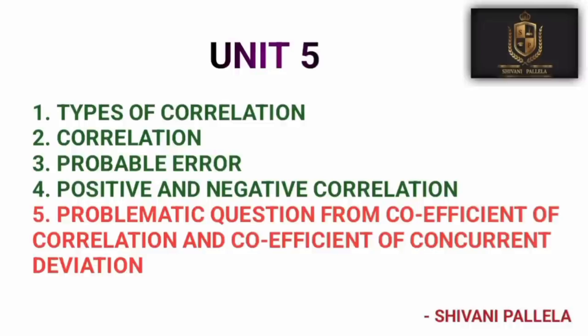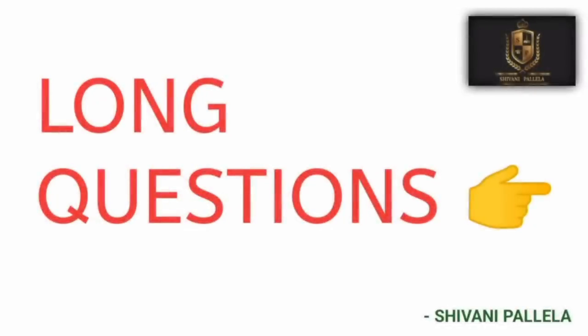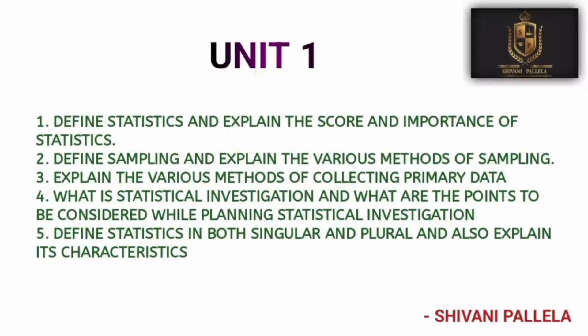Don't spend too much time in Part A — just concentrate on Part B, because Part B carries 60 marks and Part A carries only 20 marks. Your preference should be given to Part B first. In the three-hour duration, complete Part B within two hours and complete Part A in the remaining half an hour. Use any extra time to write additional content. In Part B, from Unit 1, the question can be either theory or problematic.